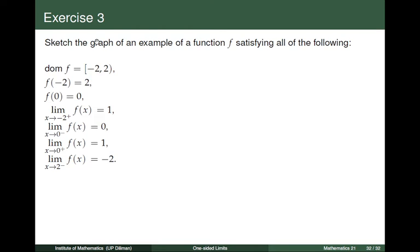And number 3: sketch the graph of an example of a function f satisfying all of the following conditions. The domain of f is the interval negative 2 to 2 where negative 2 is included and 2 is excluded. The value of the function at negative 2 is 2 and the value of the function at 0 is 0.